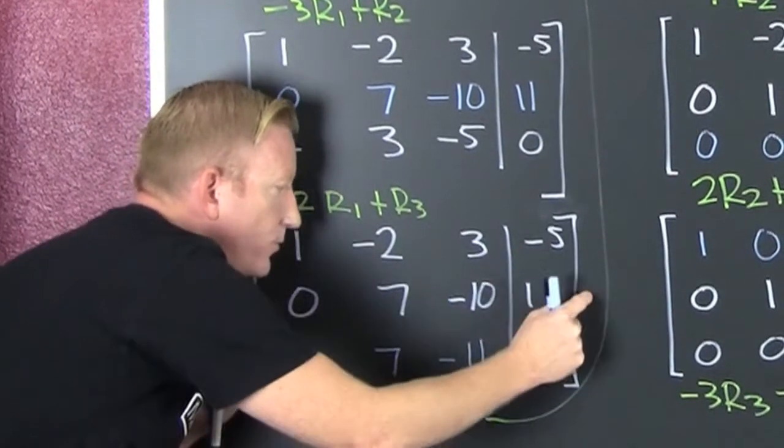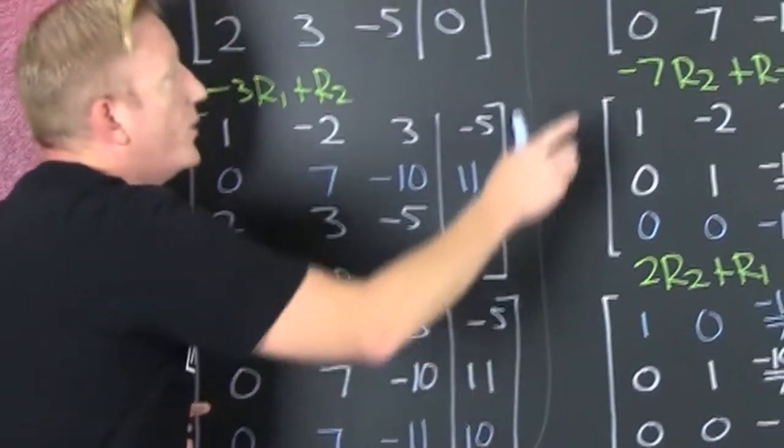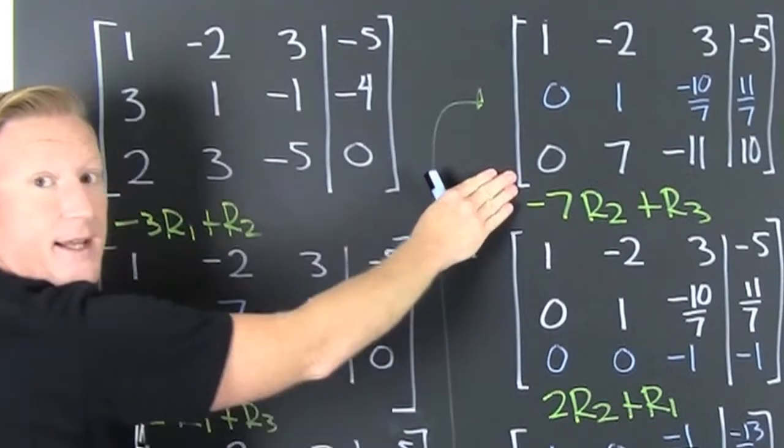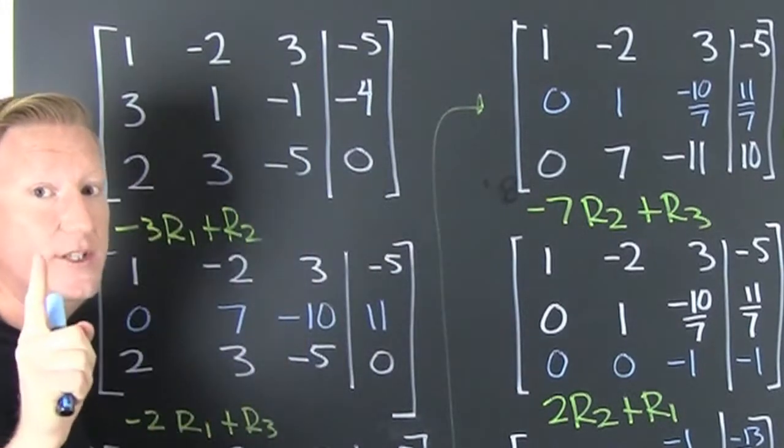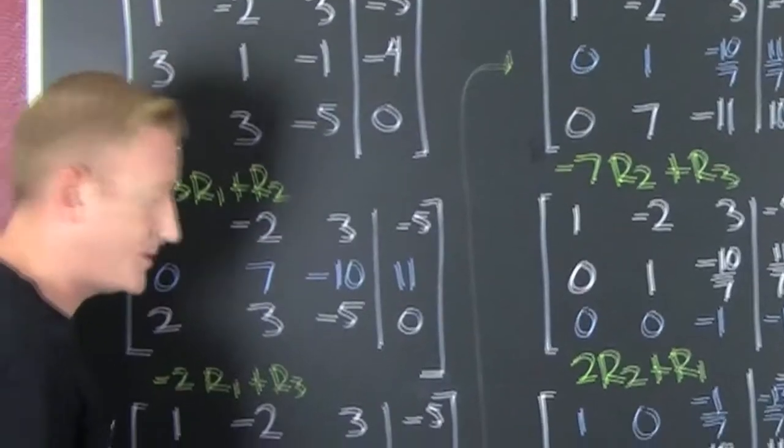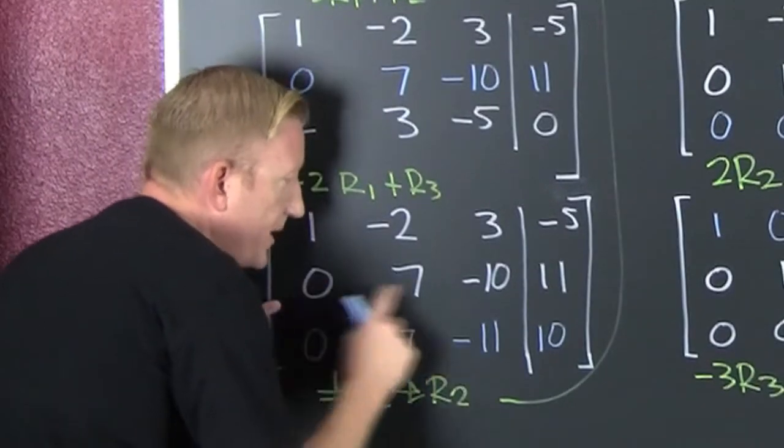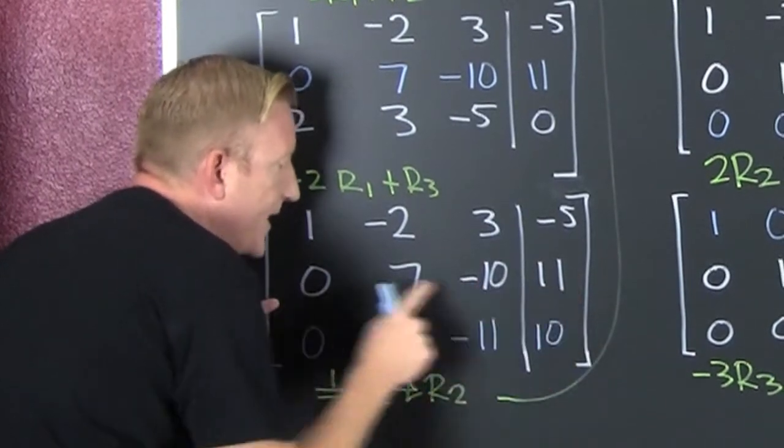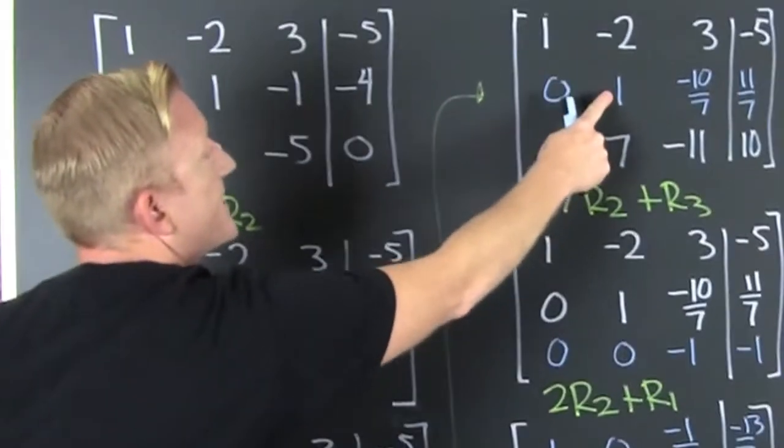I multiply that entire row by 1 seventh and I recopy everything else. Nothing else is changing. Only one row is changing from matrix C to matrix C. So then, when I multiply this by 1 seventh, I get a 1 right there. The desired effect.